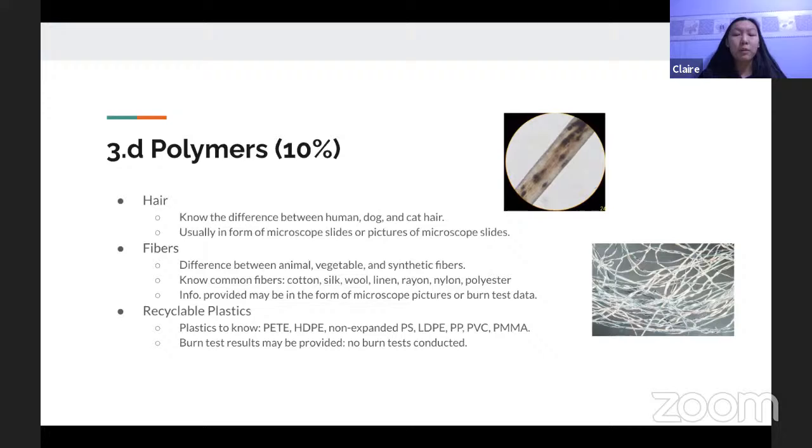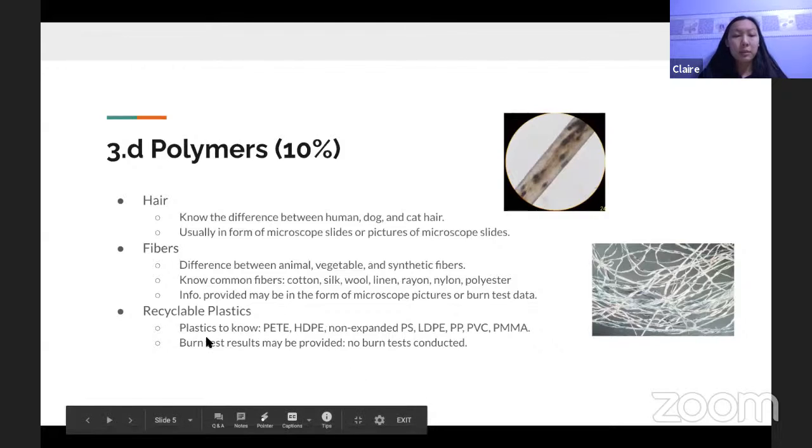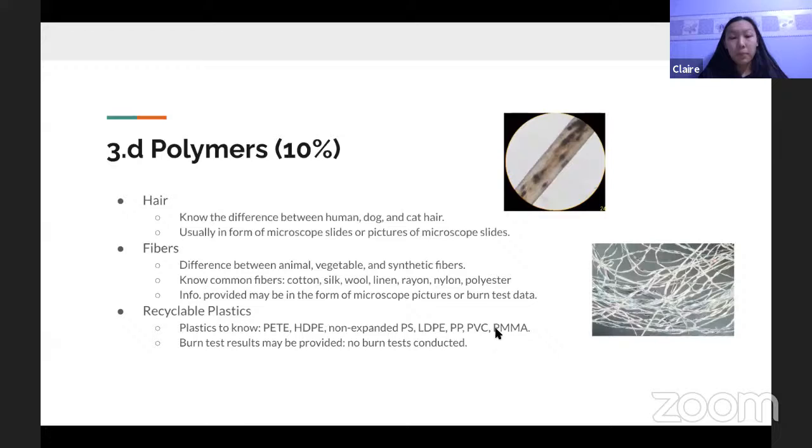Or they'll give you burn test data, or you'll have to actually perform the burn test yourself. However, performing the burn test yourself usually only happens at upper level competitions. So, at lower level competitions or invitationals, they'll usually give you the data. And the last part is recyclable plastics. So, here's the list of plastics that you'll need to know. There will be no burn test conducted. However, they might give you test results. So, you'll have to use the test results to identify the plastics.